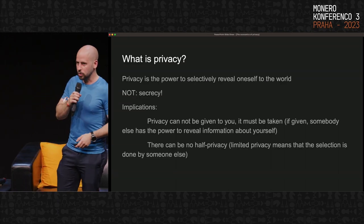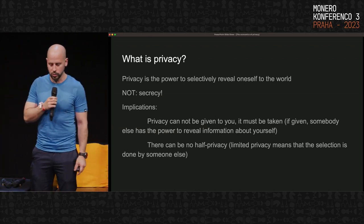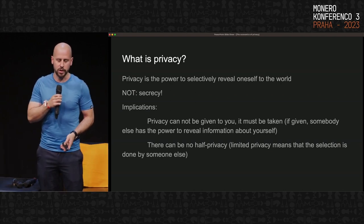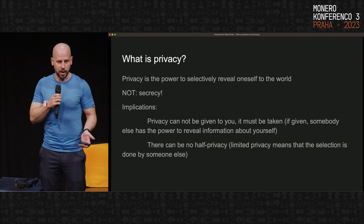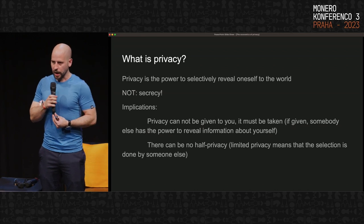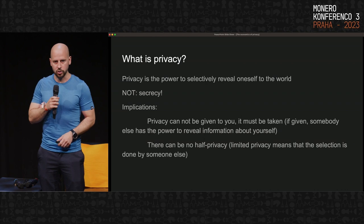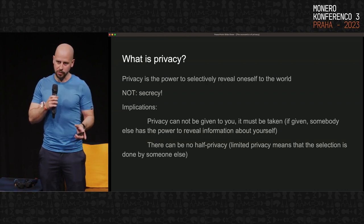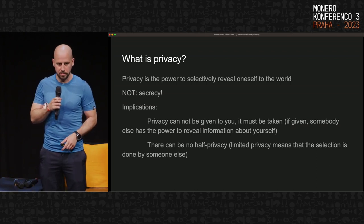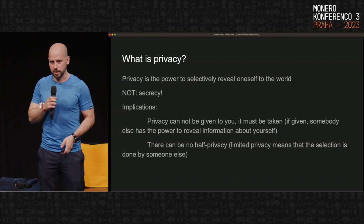Let's talk first about what privacy is. The definition I'm using here is from the cypherpunk manifesto: privacy is the power to selectively reveal oneself to the world. It's very important to distinguish it from secrecy. The reason I'm saying this is that, as you will see later, many of the arguments made in the economics of privacy field conflate privacy and secrecy.